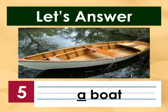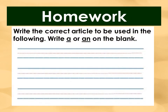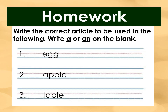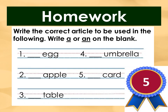I hope you got them all right! Now for your homework, what you're going to do is write the correct article to be used in the following. Write A or AN on the blank. Number 1: Blank Egg. Number 2: Blank Apple. Number 3: Blank Table. Number 4: Blank Umbrella. Number 5: Blank Card. For a total of 5 points! Enjoy your assignment, kids!